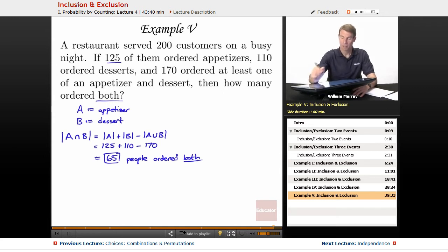So, that was probably easier than some of our other problems here. But let me make sure that all the steps are really clear. First thing to do is to set up events, A and B. People who ordered appetizer, people who ordered dessert. And then we're asked how many people ordered both, which means we're counting an intersection.